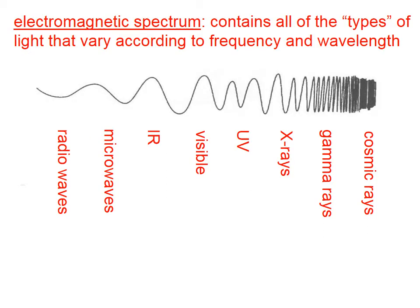The electromagnetic spectrum contains all of the types of light that vary according to frequency and wavelength. I've represented here many of the different types of light. Radio waves, which have very long wavelengths, and cosmic rays at the other end of the spectrum, which have very short wavelengths. The differences in the lengths of these wavelengths is much greater than I'm able to show in this picture.